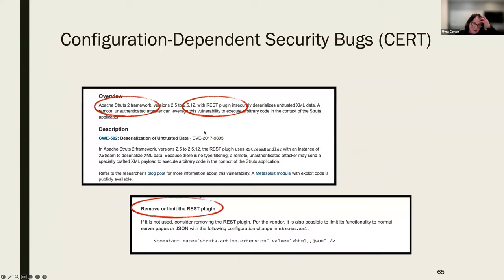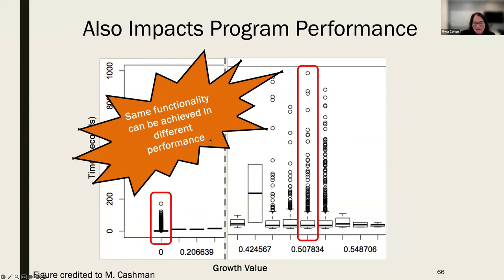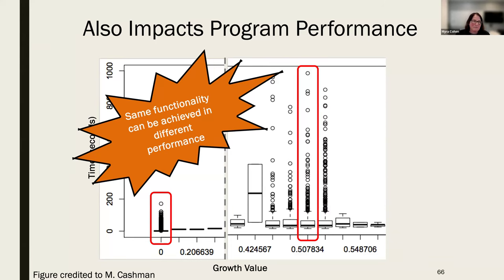We see this a lot in security too — the CERT database has examples of configuration option combinations that don't work together, warning you to remove or limit certain plugins to avoid those faults. This doesn't just impact correctness — from our study of configurability in bioinformatics software, we saw a wide range of performance times to produce the same growth value, and even cases where the system failed to grow at all but still showed a wide range of time to answer. Performance can also be significantly impacted by configurability.